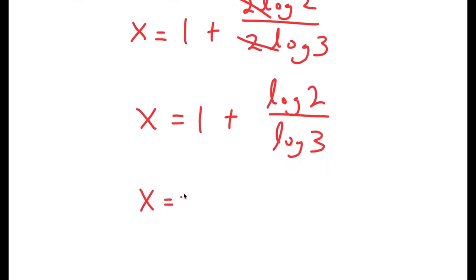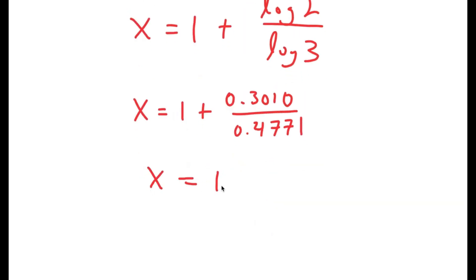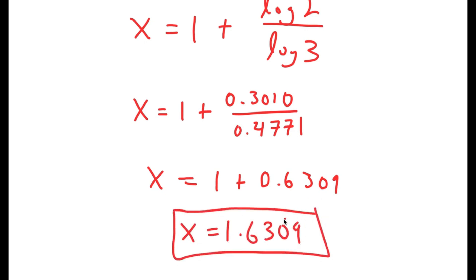Now log 2 is equal to 0.3010 and log 3 is equal to 0.4771. So if I divide these two, I get x equals 1 plus 0.6309, meaning x is equal to 1.6309. So this is my answer.